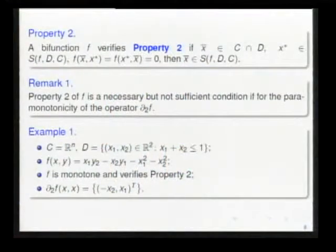Note that property two is a necessary but not sufficient condition for the paramonotonicity of the diagonal operator. Here we present an example. This example is a well-known example: a rotation operator. In this case, f is monotone and verifies property two, but this operator is not paramonotonic.